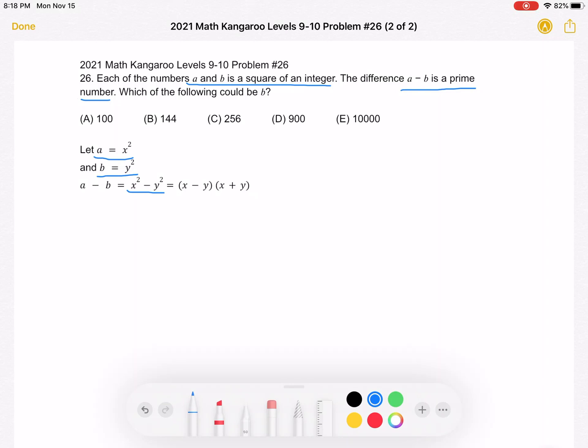the difference of squares, which we can rewrite as the quantity of x minus y times the quantity of x plus y. And we know that this product is a prime number.